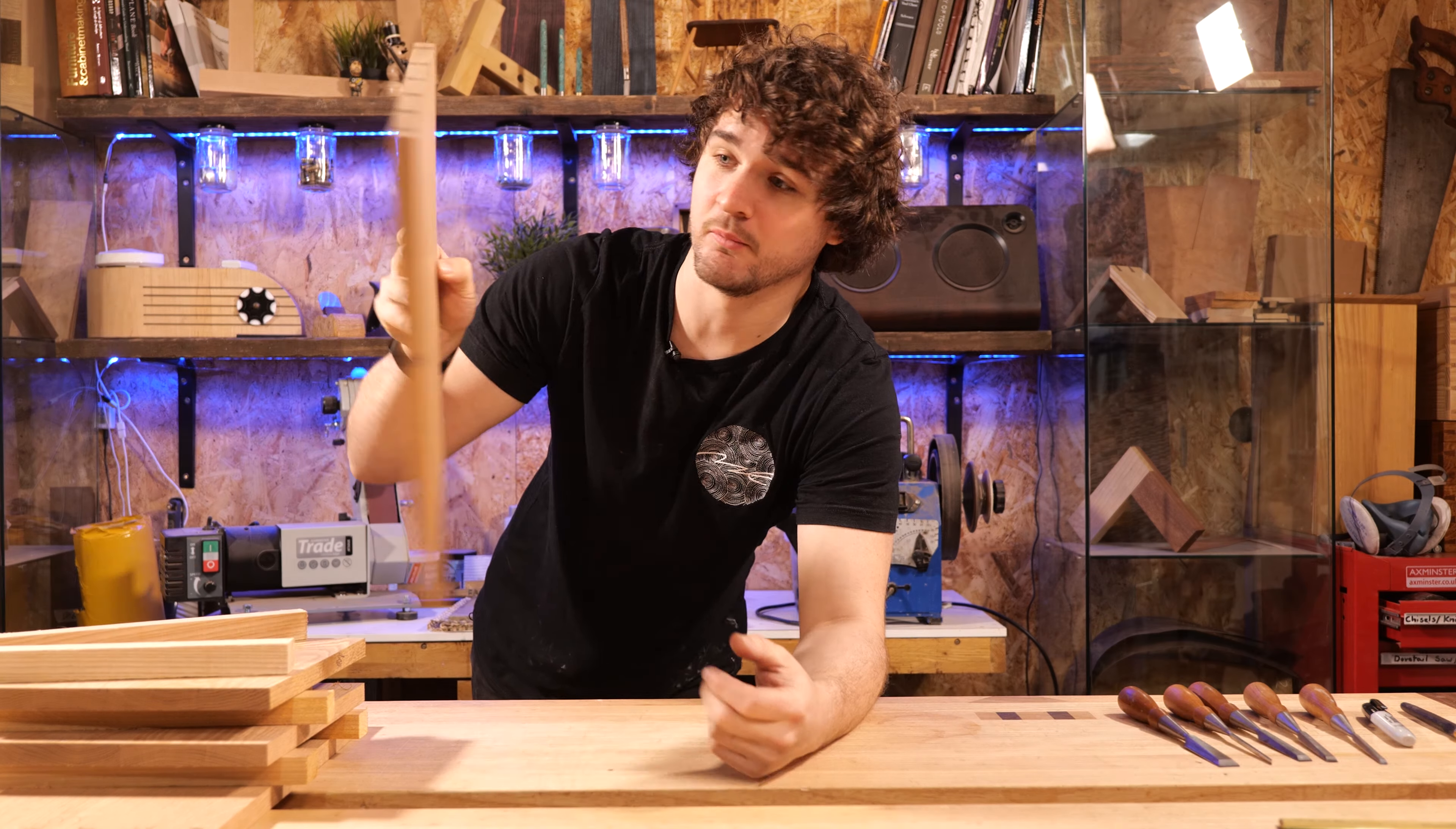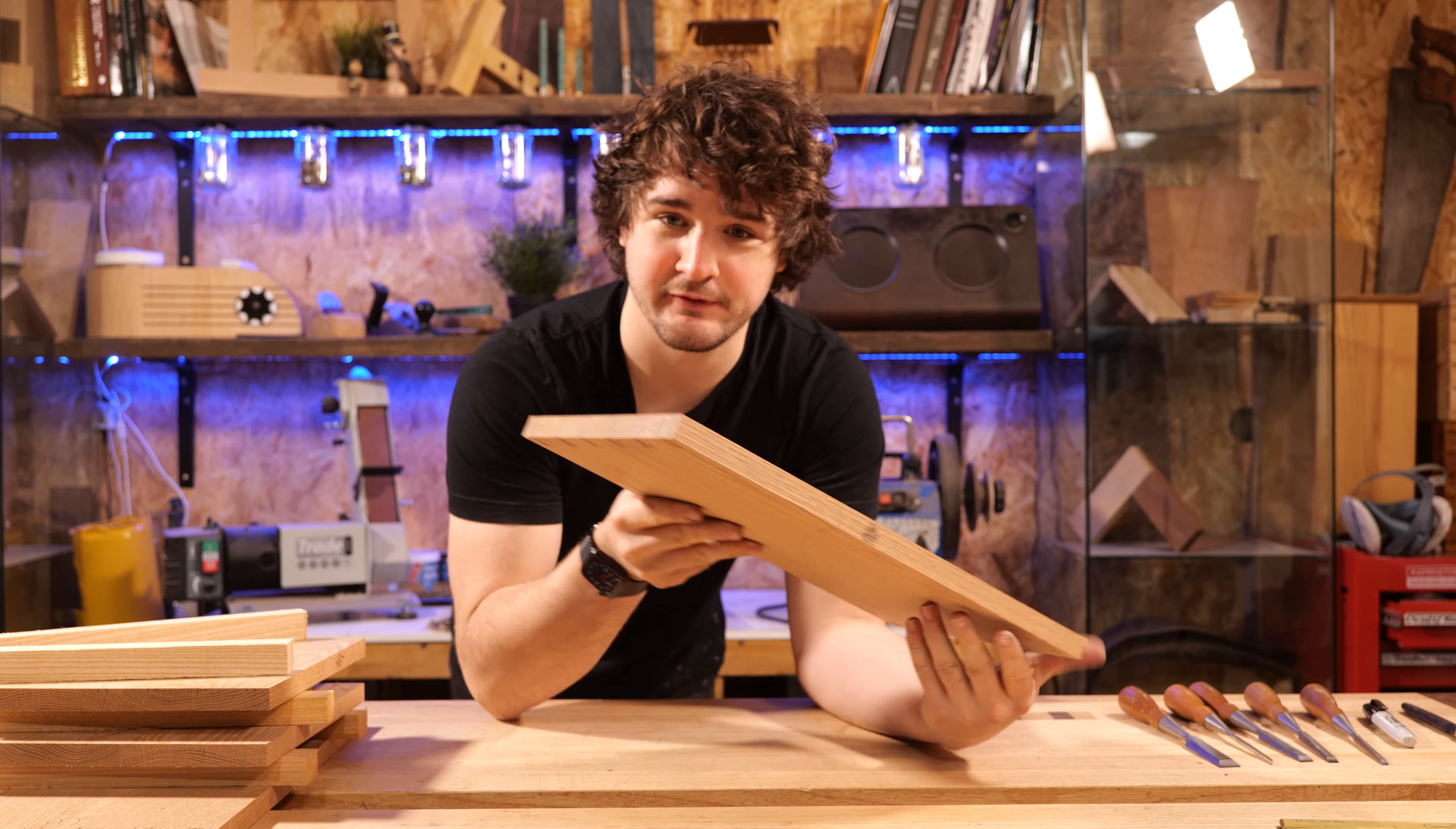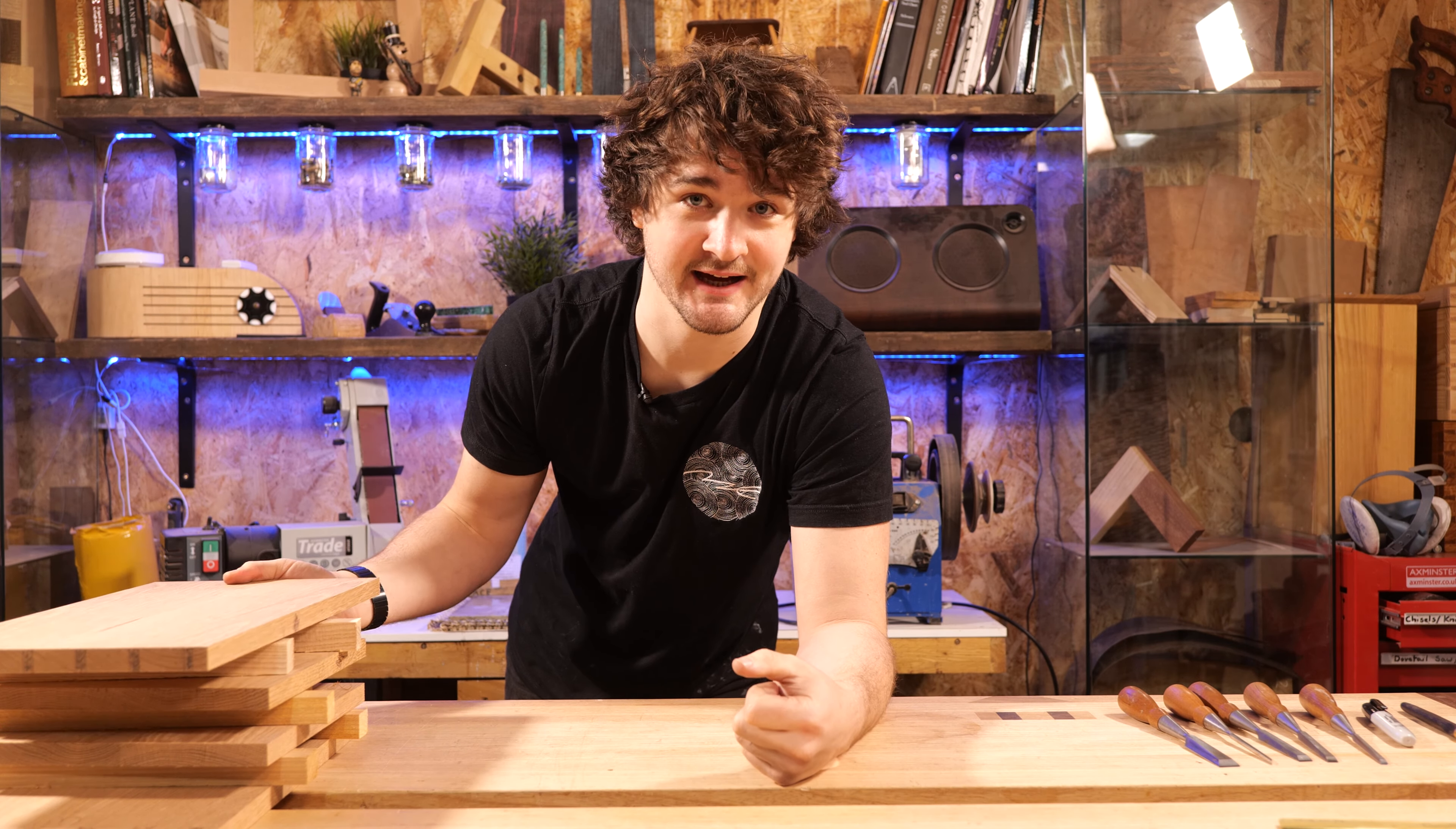It's also worth saying at this point that we are not going to be doing anything with the miters, and the reason for this is we've got quite a few steps between now and assembling the box. So if we've got these fragile miters sitting on either end, there's going to be a much higher chance of us accidentally whacking them on something and damaging the joint. So we're not going to cut those out until we absolutely have to.